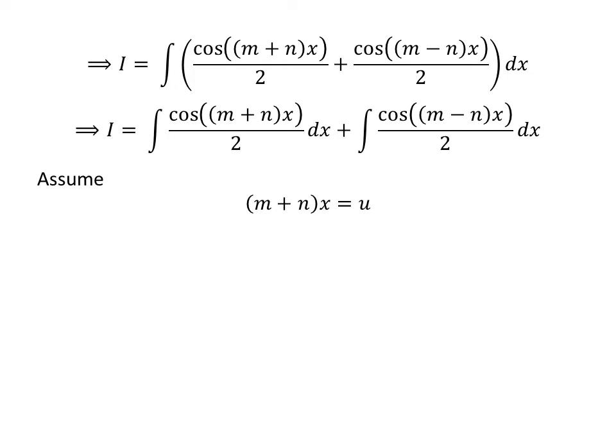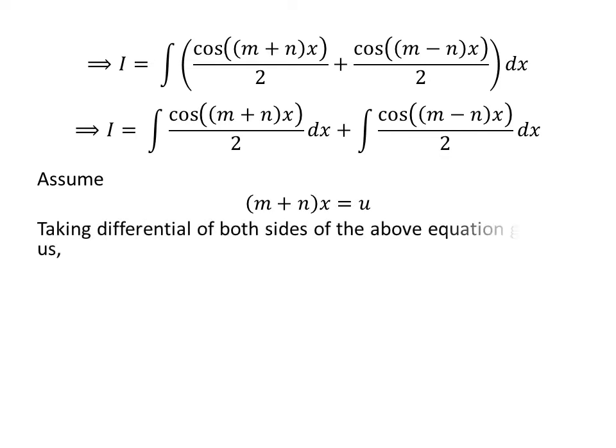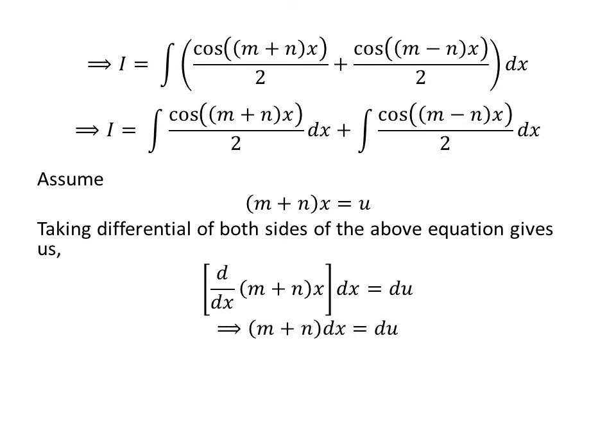Let us solve the integral of cosine of (m+n)x upon 2 with respect to x using the substitution method. Let us assume m plus n times x is equal to u. Differentiating both sides gives us m plus n times dx is equal to du, so dx is equal to 1 upon (m+n) times du.